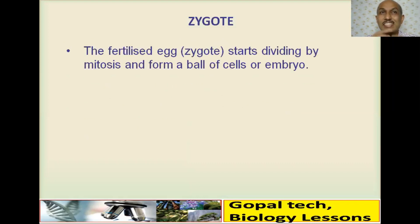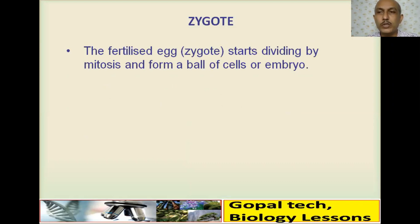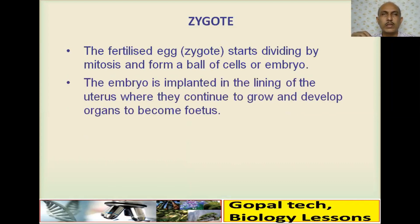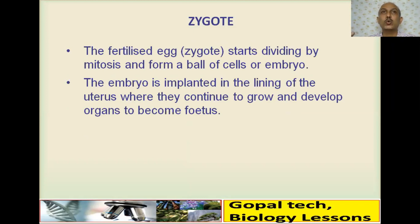The fertilized egg, now referred to as a zygote, starts dividing by mitosis and forms a ball of cells that develops into an embryo. This embryo is implanted in the lining of the uterus — the endometrium — where it continues to grow, develops its organs, and becomes a fetus.